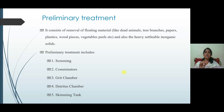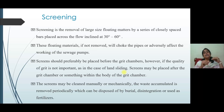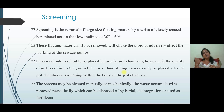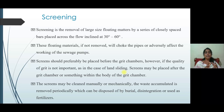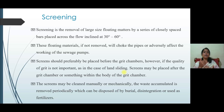Screening is basically a filtration process using mesh-type or bar screens. It is the removal of large-sized floating matter by a series of closely spaced bars placed across the flow channel, inclined at 30 to 60 degrees. This inclination is provided along with bar racks for easy cleaning. These floating materials, if not removed, will choke the screens and affect the efficiency of the treatment plant, as well as the working of the sewage pumps. The screen should preferably be placed before the grit chamber.